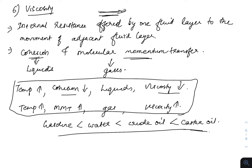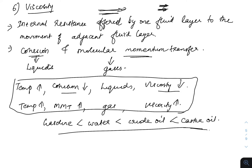The next term is viscosity, which is very important. When two layers of fluid are flowing, the resistance offered by one layer over the adjacent layer is called viscosity. Viscosity is the internal resistance offered by one fluid layer to the movement of the adjacent fluid layer. Viscosity is due to cohesion and molecular momentum transfer (MMT). Cohesion is important in liquids, while molecular momentum transfer is mainly important in gases.